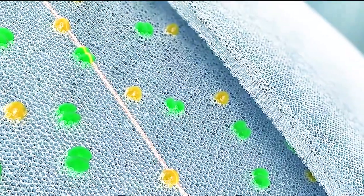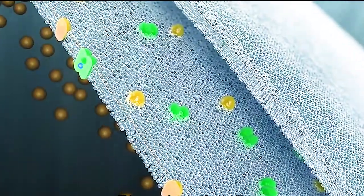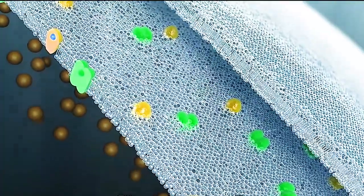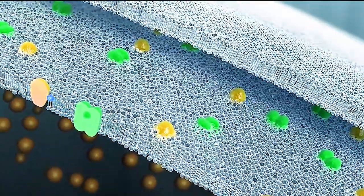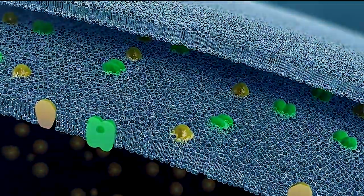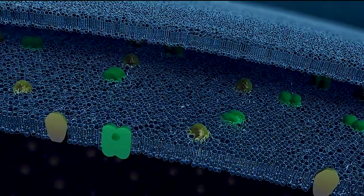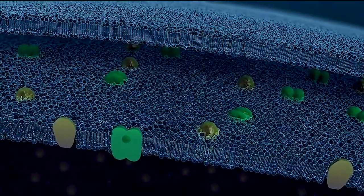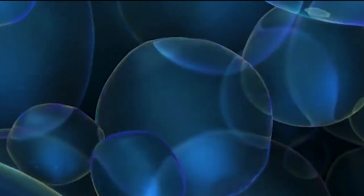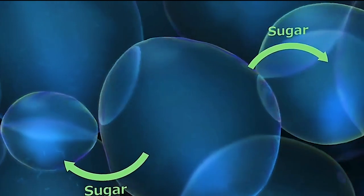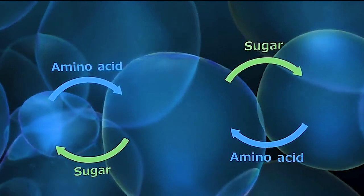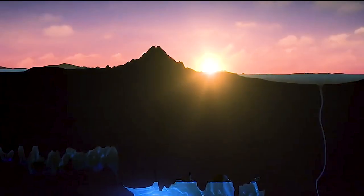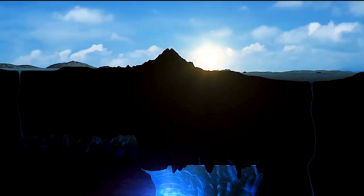This second stage of proto-life evolved to make use of the sunlight available on the Earth's surface. They developed a metabolism that converted light energy into electrochemical energy. Moreover, they used sugars to store energy for the sunless night hours. The source of energy for life on Earth shifted from nuclear geysers to the sun.